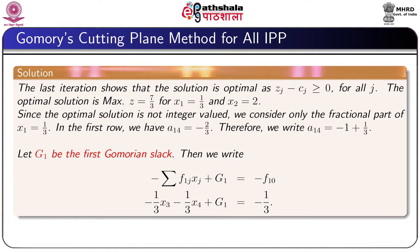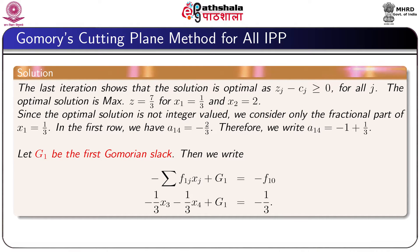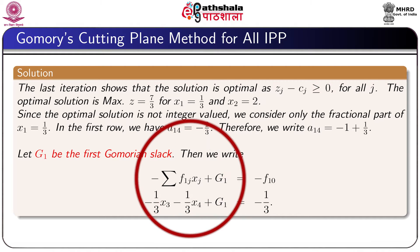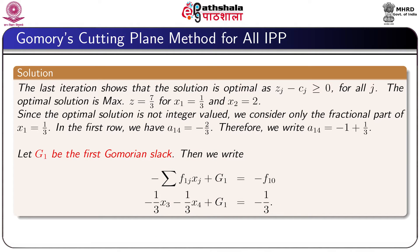Since the optimal solution is not integer, we consider only the fractional part of x1 equals one-third, which can be written as 0 plus one-third. In the first row, a14 equals minus two-thirds, which is a negative fractional, so we write it as the positive fractional part: a14 equals minus 1 plus one-third. Let g1 be the first Gomory slack. Then the Gomory constraint is: minus summation f1j·xj plus g1 equals minus f10, which gives: minus one-third·x3 minus one-third·x4 plus g1 equals minus one-third.